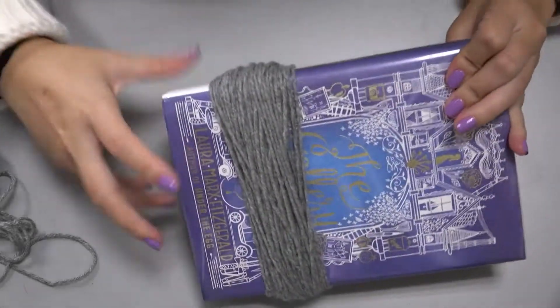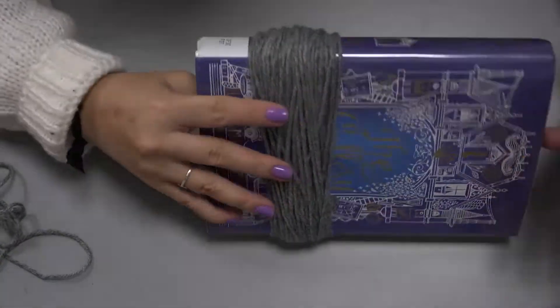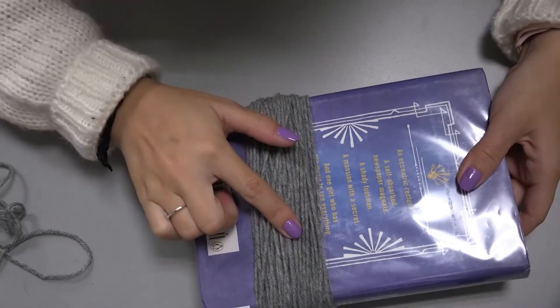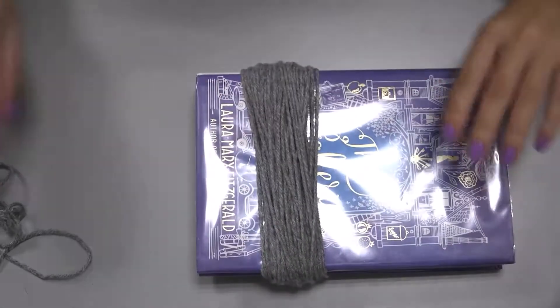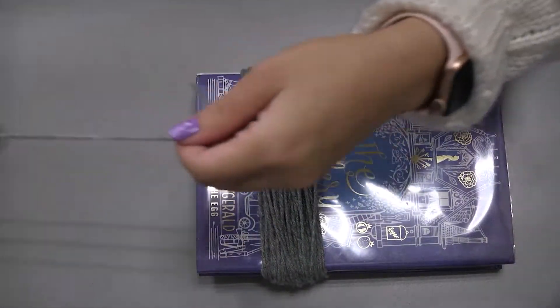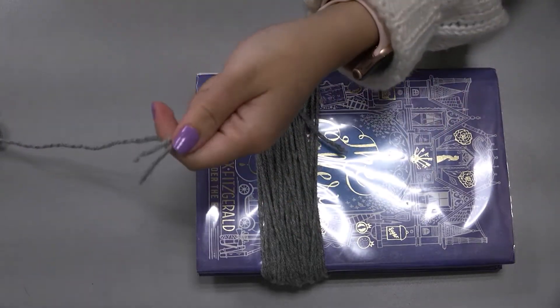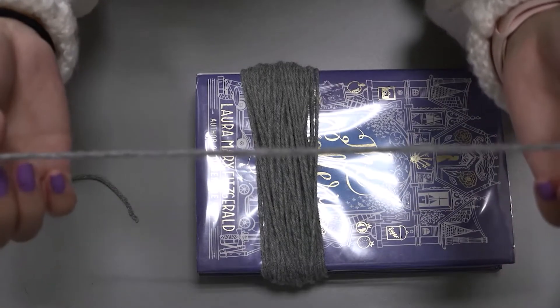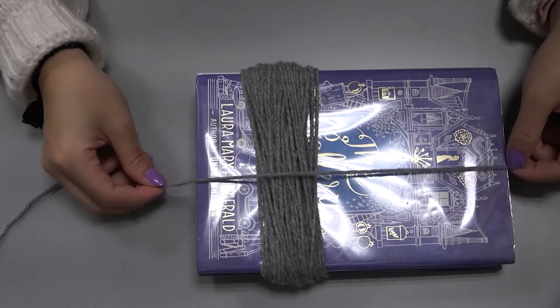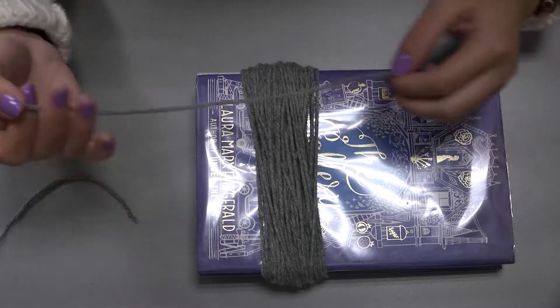And then you're going to want to flip it over to the opposite side. So you do want to make sure that you end the yarn on the side that you started. So we're going to flip it to the other side. You're going to cut a piece of yarn probably about a little bit bigger than the size of your book.